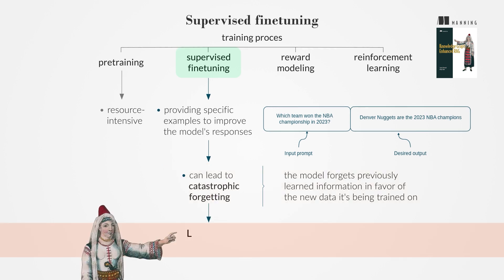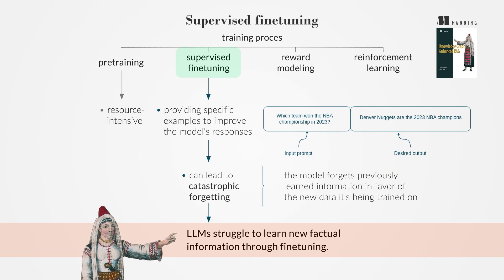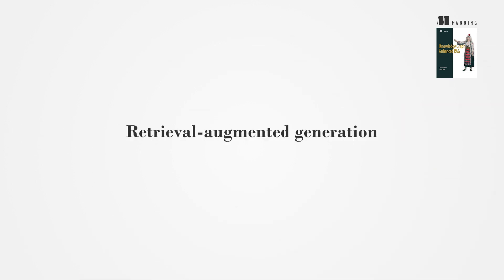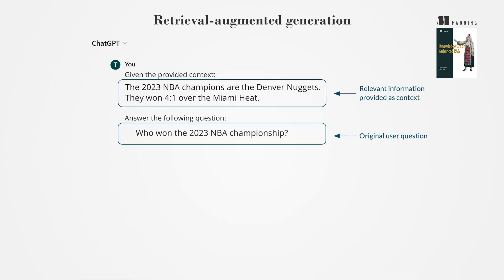Research shows that LLMs struggle to learn new factual information through fine-tuning, making it a complex and evolving field. To enhance response accuracy, the RAG approach includes relevant facts or information directly in the input prompt. This reduces dependence on the LLM's internal knowledge base and minimizes hallucinations.